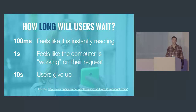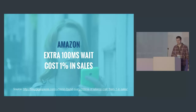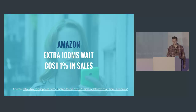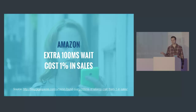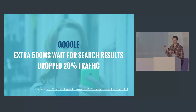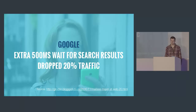There have been some good case studies into performance and how it can affect large sites. Amazon famously did a study where they added an extra 100 milliseconds of latency and it was costing them about 1% in sales. Similarly, Google added an extra 500 milliseconds of latency to search results and traffic dropped by 20%.